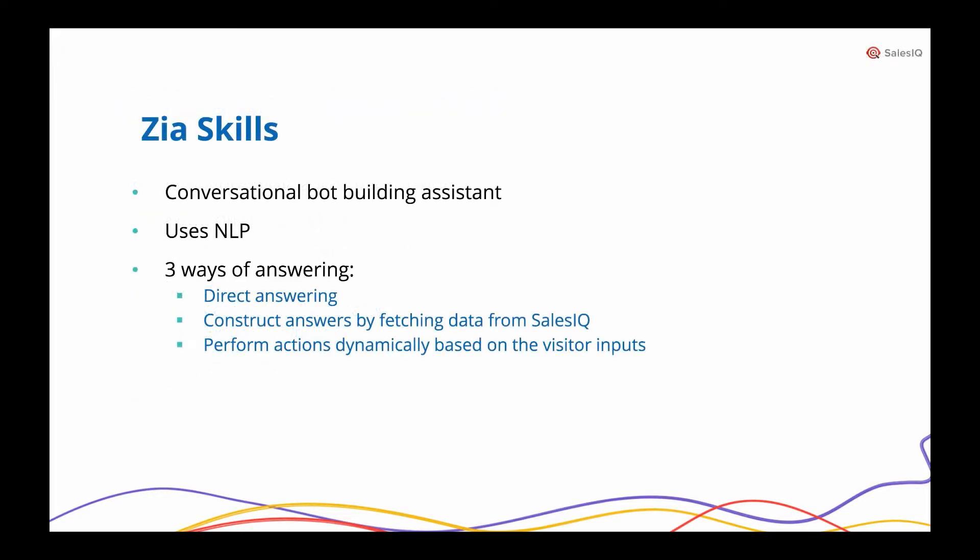Zia Skills is a conversational bot-building assistant that uses natural language understanding to process and perform skills and actions to respond to visitor questions. It lets you build bots capable of more than just answering chat requests — they can perform operations dynamically, fetch necessary data from Sales IQ, process it to construct contextual answers, and much more. Importantly, Zia Skills can be developed and managed entirely on the platform itself, at no extra cost.